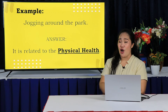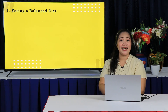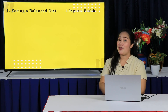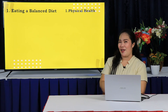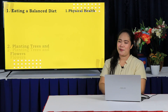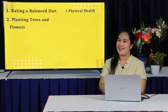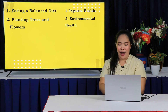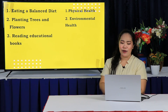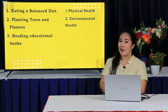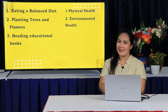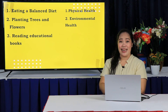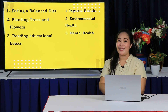Number 1: Eating a balanced diet. Correct! It is related to physical health. Number 2: Planting trees and flowers. Correct! It is related to environmental health. Number 3: Reading educational books. Nice one! It is related to mental health.